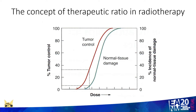This graph is taught to us as undergraduates and explains the concept that increasing tumour control is seen with increasing radiation dose, but also increasing normal tissue toxicity. In this particular scenario, it's important to point out that what we're talking about in terms of toxicity here are late normal tissue toxicity effects, which may not occur for months or years after treatment and are generally irreversible.